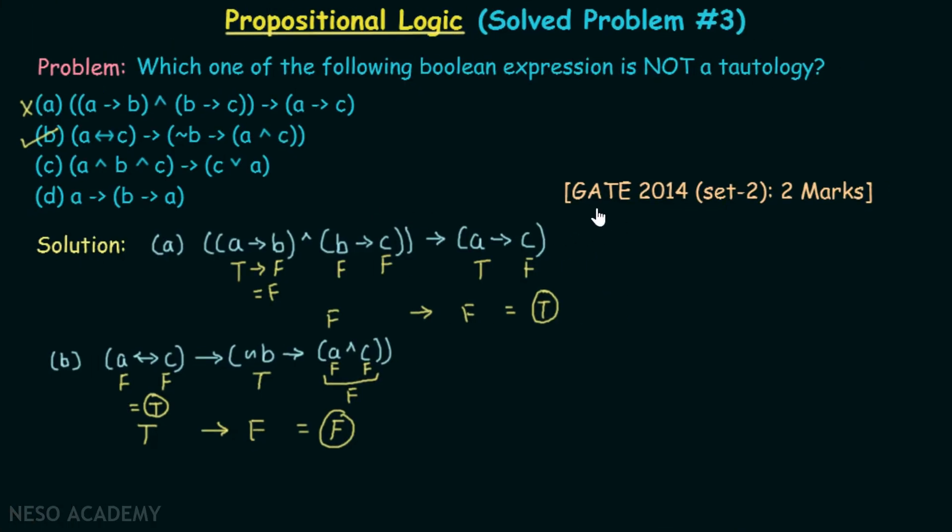This question has been asked in GATE 2014 set 2 for two marks. You can obtain two marks very easily in the GATE examination if we use this particular method in solving this question. You can definitely check the other options and you would be able to obtain only a tautology from these expressions.